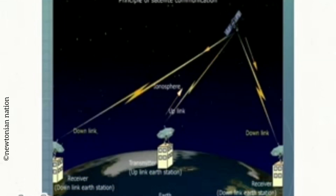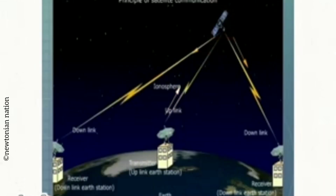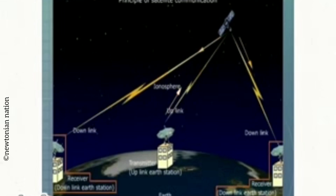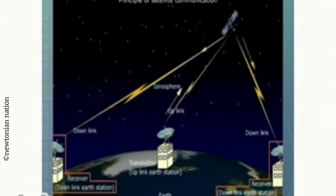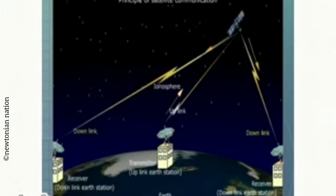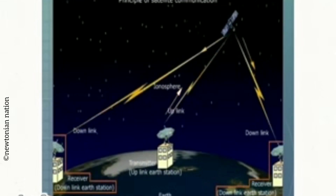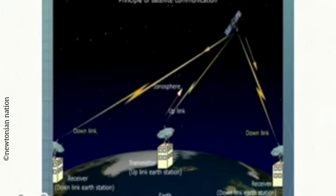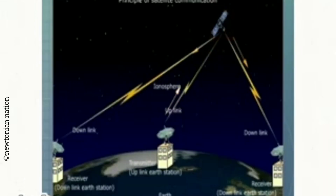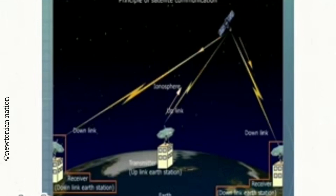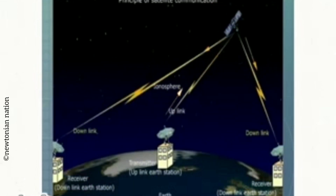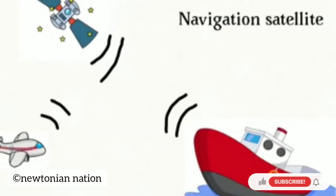Principle of satellite communication: The process of communication begins at the earth station. The earth station is an installation designed to transmit and receive signals from the satellite. The earth station sends signals in the form of high frequency. The area which receives the signal from the satellite is known as the satellite footprint.